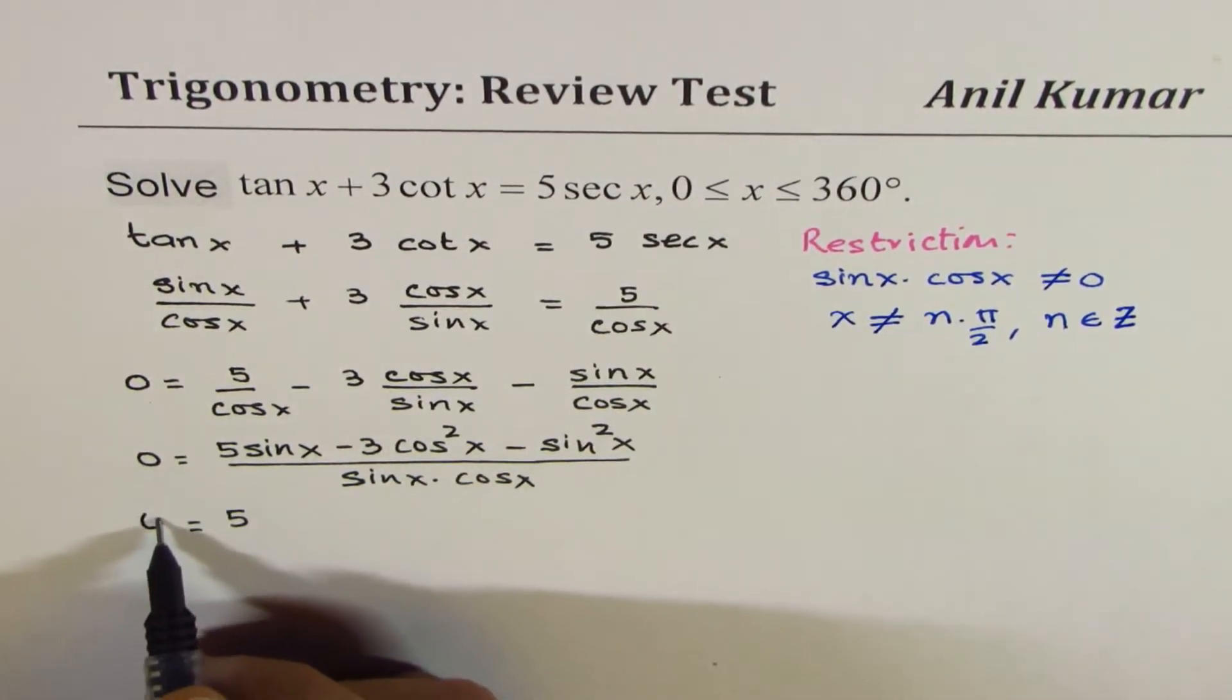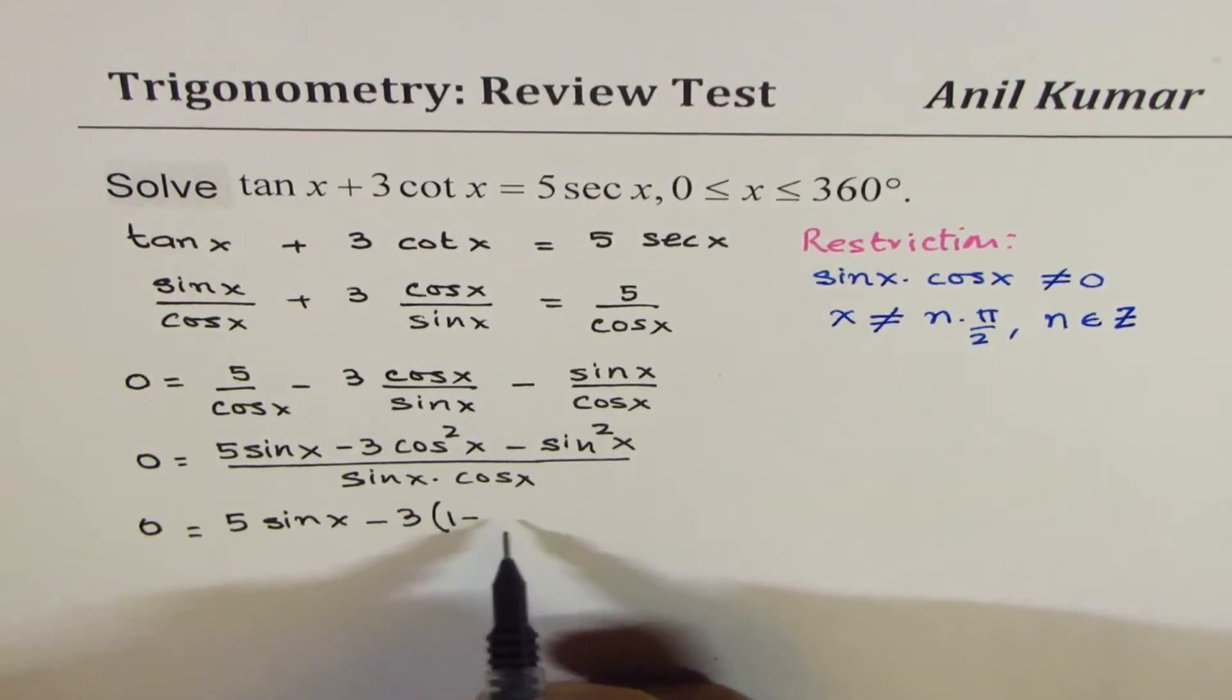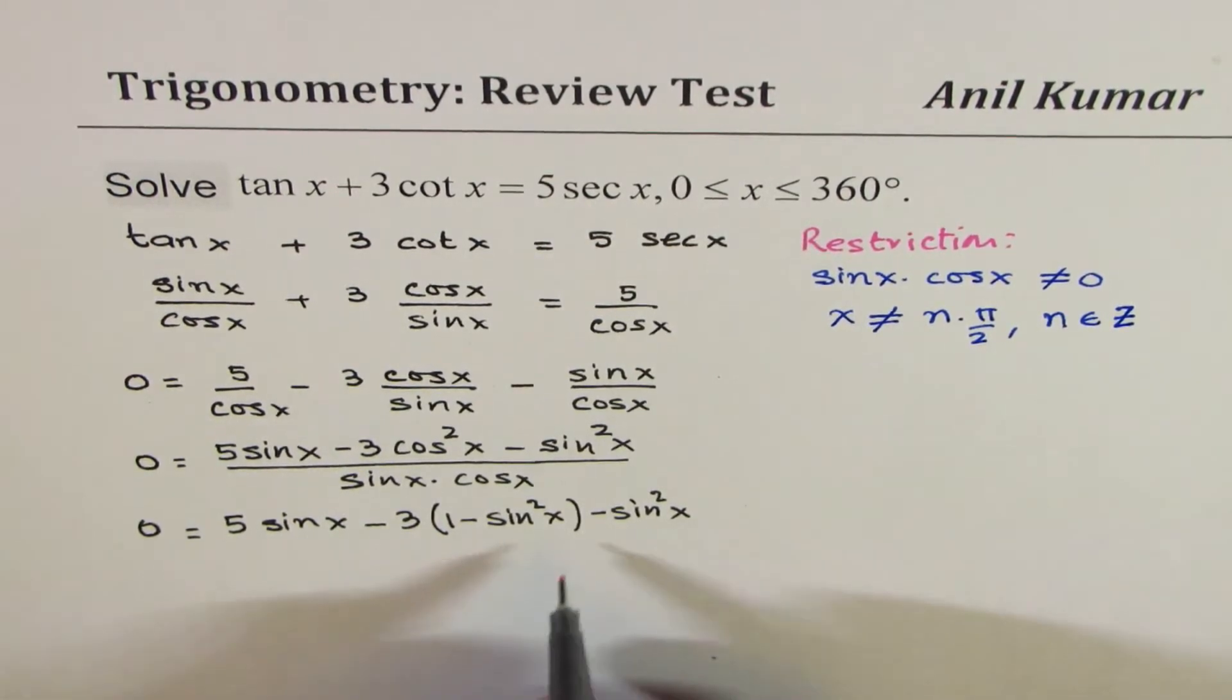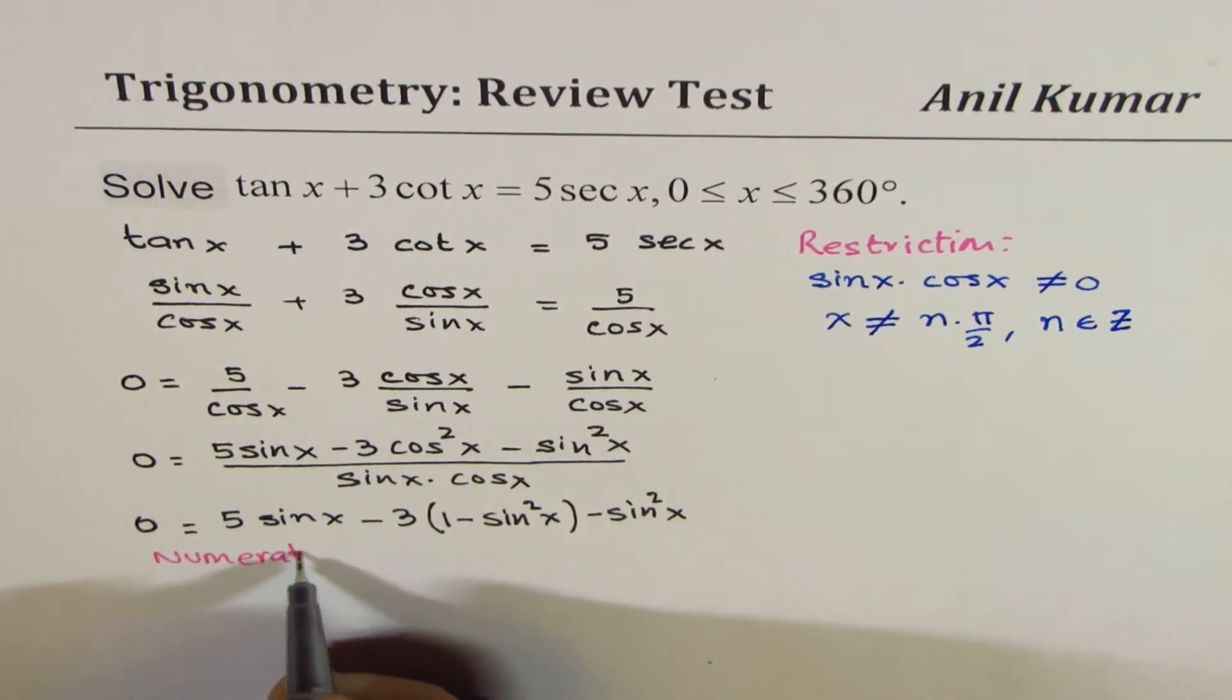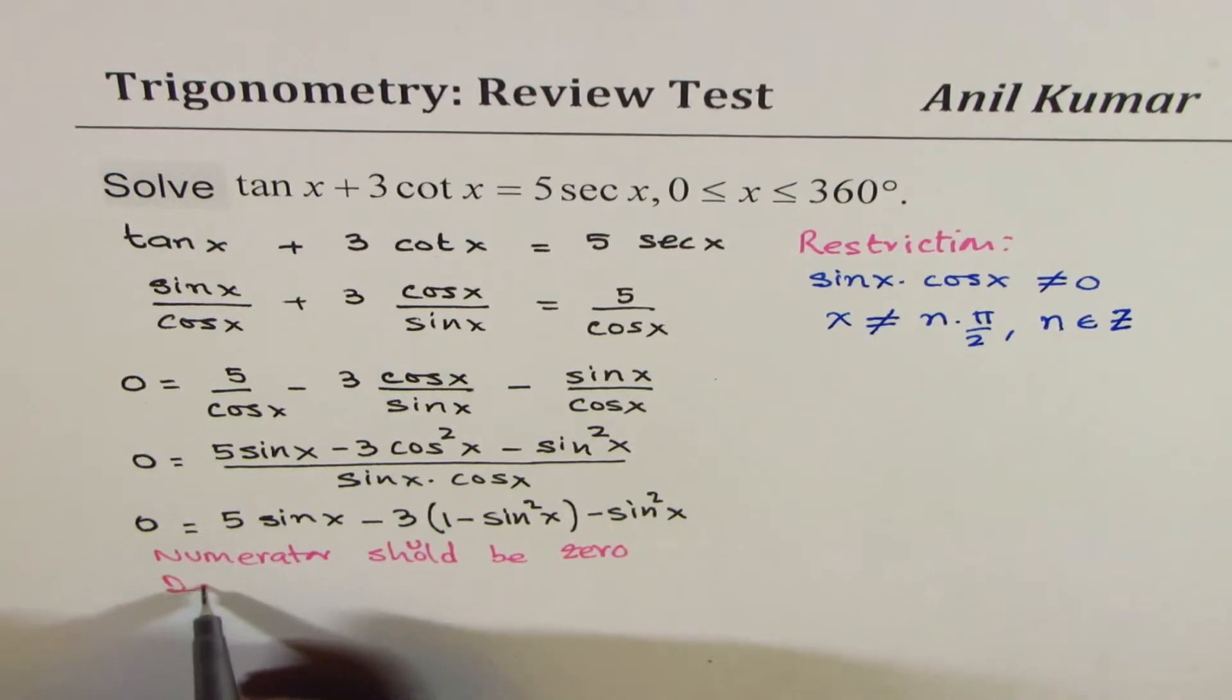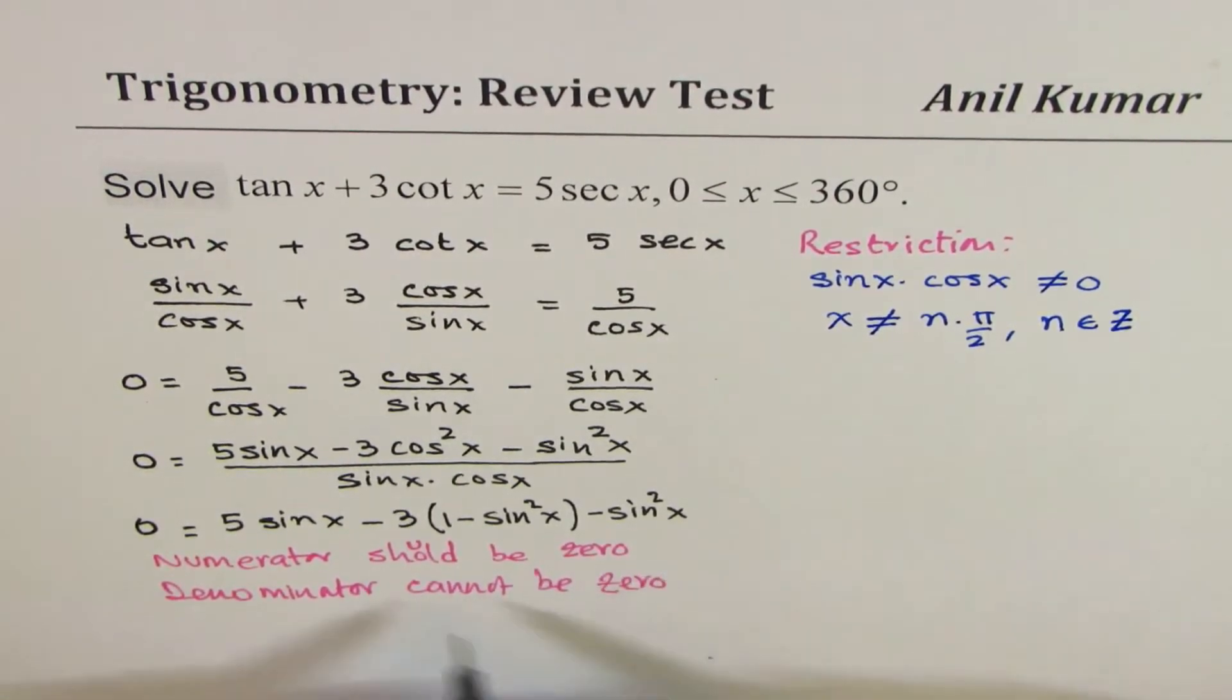And with that restriction, we can now write that the numerator, 5 sine x minus 3, now I'll write cosine square x as 1 minus sine square x, minus sine square x.